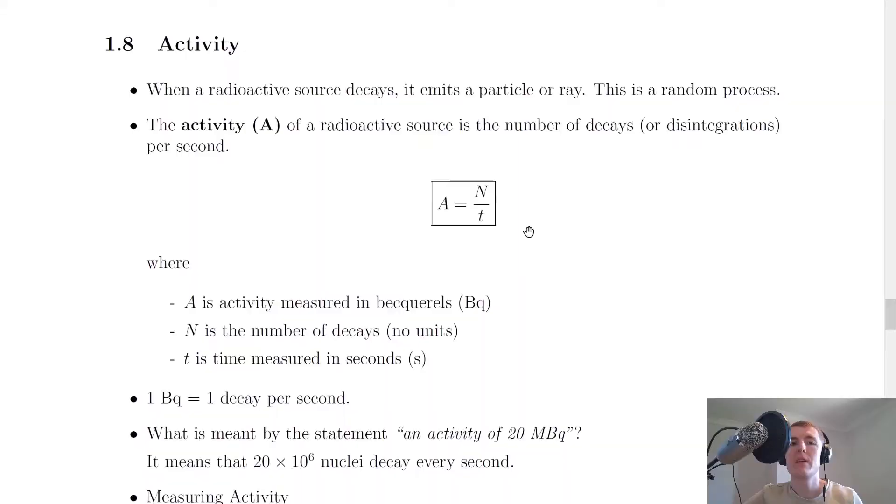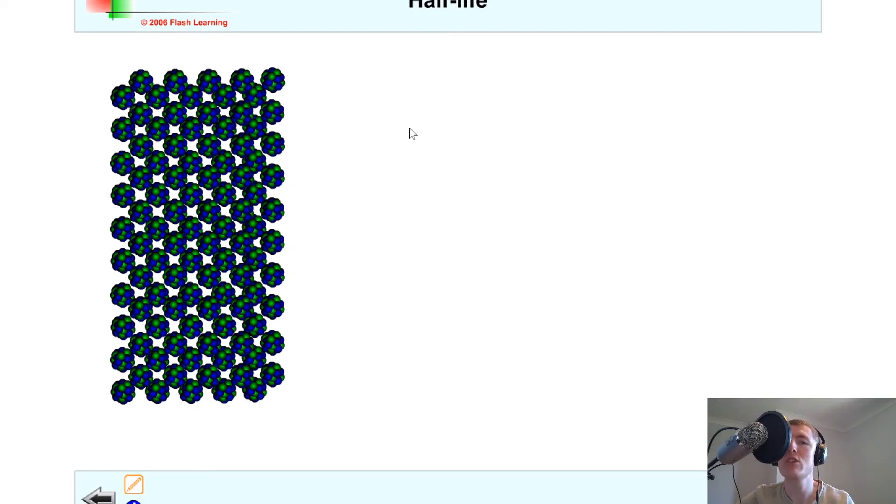Hey guys, welcome back. In this video we're going to look at the activity of a radioactive source. When a radioactive source decays, it emits a particle or a ray. Remember, we saw that was the definition of radioactive decay in the theory video. This is a random process.